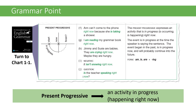The second part of Table 1-1 talks about the present progressive. The present progressive expresses an activity that's in progress — occurring or happening right now. It means the event is in progress at the time the speaker is saying the sentence. The event began in the past, is in progress now, and will probably continue into the future. Another way of thinking of the present progressive is something that's incomplete — meaning it's not finished yet, but will finish at some point.